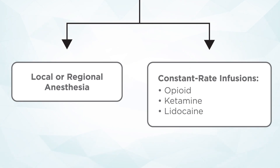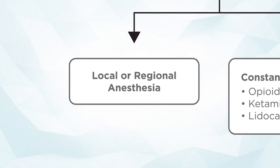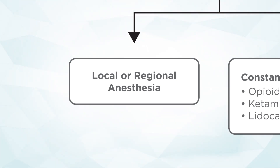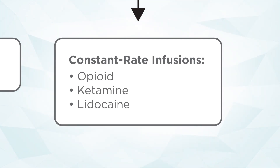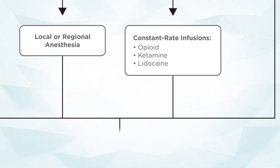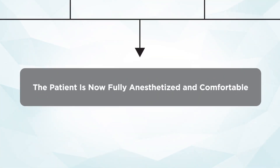My first go-to technique is going to be a local or regional anesthetic technique, and that is also best done preemptively before we have the potential for pain or discomfort for this patient. If that regional block has failed, we will consider the alternative use of a constant rate infusion. Opioids, ketamine, and lidocaine are all great choices. Hopefully at this point we arrive at a patient who is fully anesthetized and comfortable for the rest of their procedure.